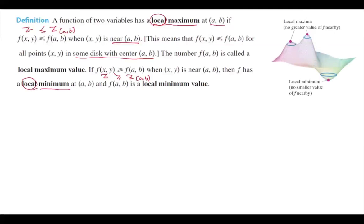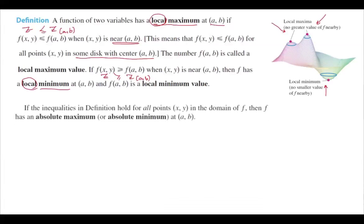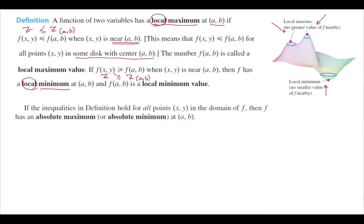Visually, near this point we have a local minimum and two local maximums. If the inequalities in the definition hold for all points in the domain, then we have an absolute maximum and absolute minimum.